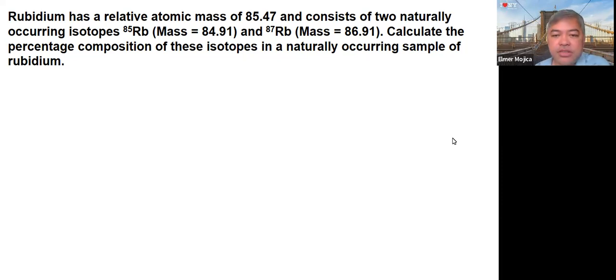Rubidium has a relative atomic mass of 85.47 and consists of two naturally occurring isotopes: rubidium-85, which has a mass of 84.91, and rubidium-87 with mass of 86.91. Calculate the percentage composition of these isotopes in a naturally occurring sample of rubidium.